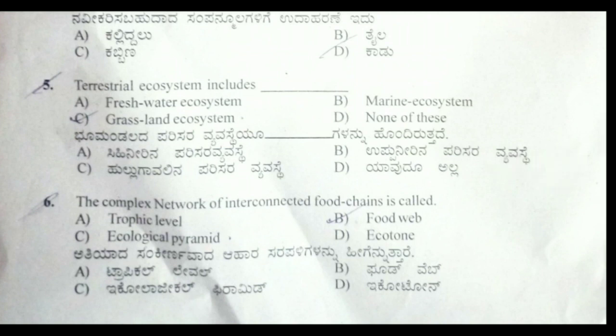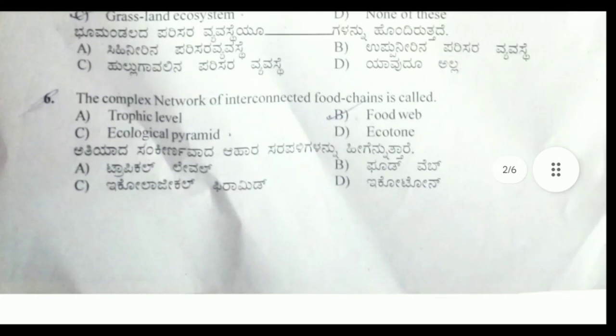Fifth question: terrestrial ecosystem includes? The correct answer is option C, grassland ecosystem. It's a simple one.